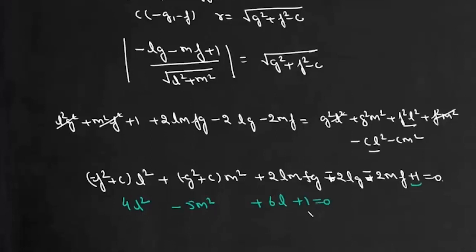Comparing, we get c - f² = 4 and c - g² = -5. Since there is no term containing lm, gf must be 0, so f = 0. Therefore c = 4, and if we put c as 4, we get g as ±3.